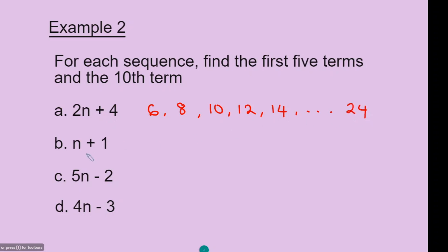For question B, to find the first number in the sequence, n equals 1: 1 add 1 is 2. The second number, n equals 2: 2 plus 1 is 3. The third number, n equals 3: 3 add 1 is 4. The fourth number, n equals 4: 4 add 1 is 5. The fifth number, n equals 5: 5 plus 1 is 6. To find the tenth term, n equals 10: 10 plus 1 is 11.